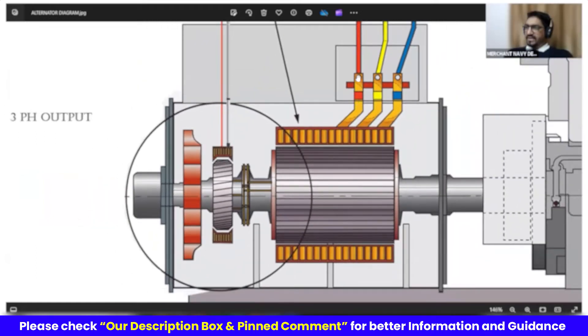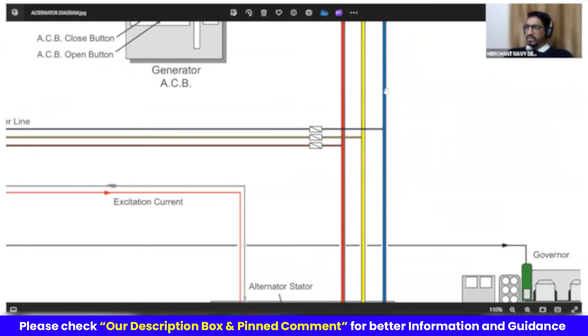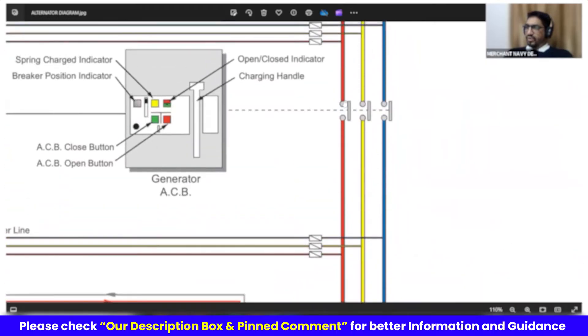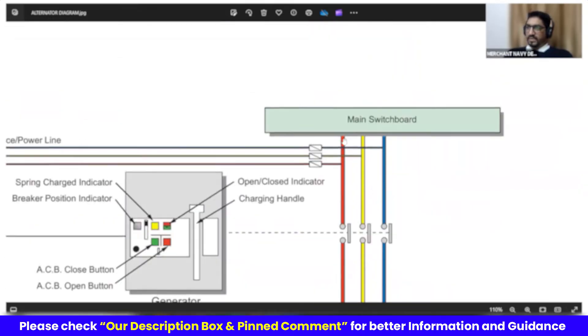Main stator will produce three phase power, RYB. It goes to ACB, air circuit breaker. And from there, it goes to main switchboard.